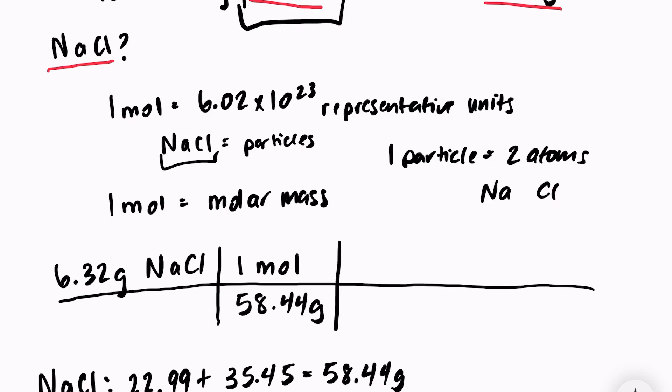My next unit conversion is to use one mole equals 6.02 times 10 to the 23rd particles. I'm trying to get rid of the unit mole, so that goes on the bottom. 6.02 times 10 to the 23rd particles goes on top. And I would be done, except that the question asks me how many atoms there are in that sample.